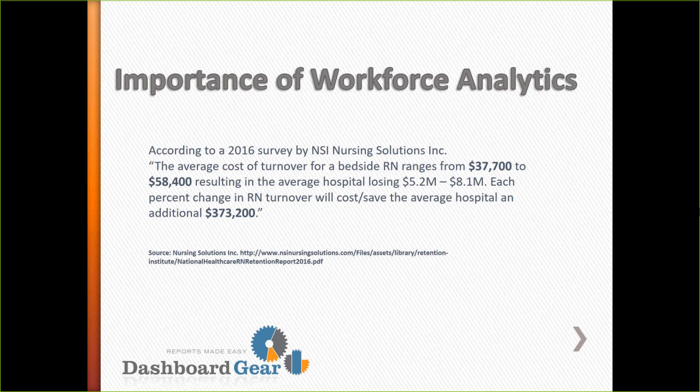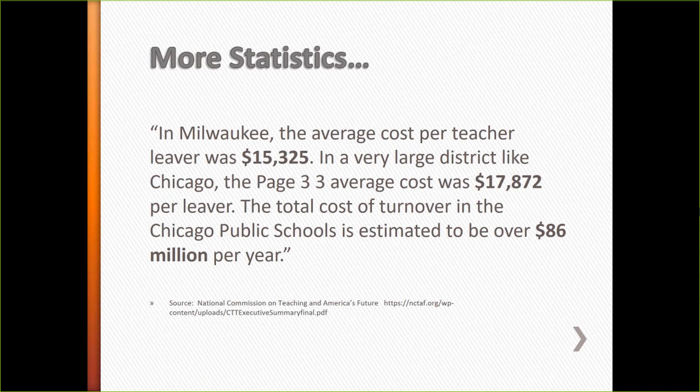The average hospital loses 5.2 to 8.1 million dollars, so each percentage change in RN turnover will cost or save an average hospital about $373,000. We're talking real dollars if you can understand why people are leaving. The first thing you have to do is be able to measure that. Similarly, for schools — the average teacher costs about $15,000 every time you lose one. Chicago schools estimate $86 million per year in cost just related to turnover. Very significant dollars.